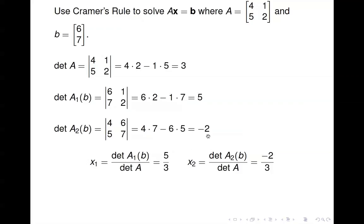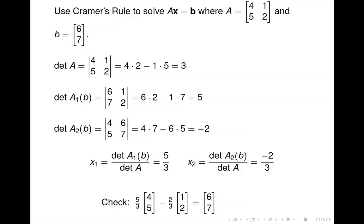So x_1 is just 5 divided by 3, and x_2 is negative 2 divided by 3. Those are the values of x_1 and x_2. Just to check, we take 5/3 times the first column of A minus 2/3 times the second column of A, and we indeed get [6, 7]. It's nice when things work like they're supposed to.